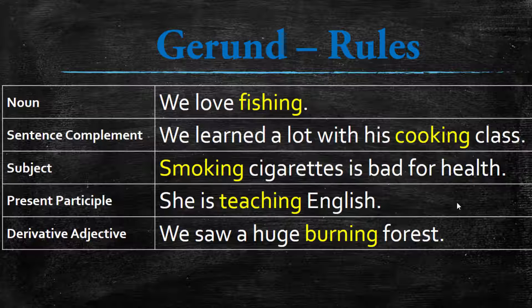A gerund can also be used as a subject — for example, 'Smoking cigarettes is bad for her.' We also use gerund as the present participle in present continuous — for example, 'She is teaching English,' describing the action she is doing right now. Finally, we use gerund as a derivative adjective to describe a noun — for example, in 'the burning forest,' 'forest' is the noun and 'burning' functions as the adjective.